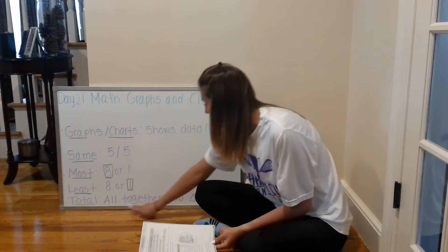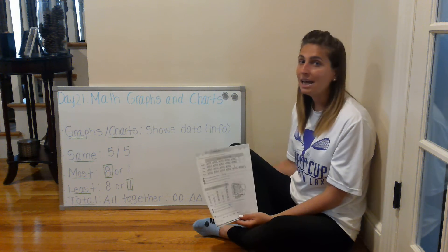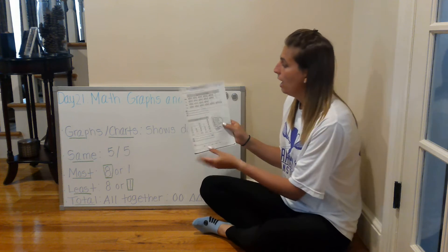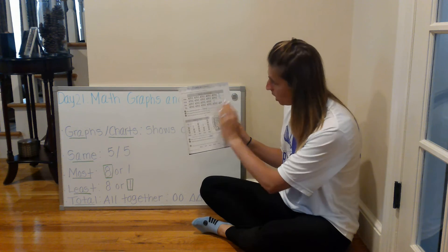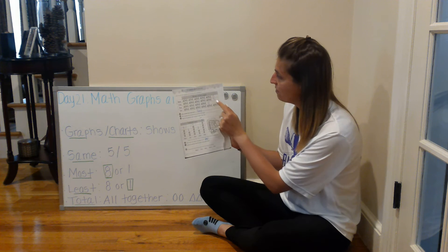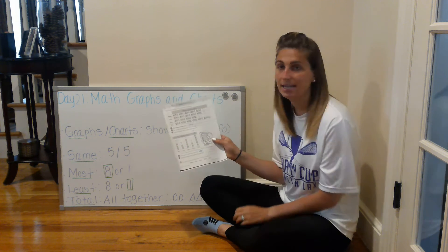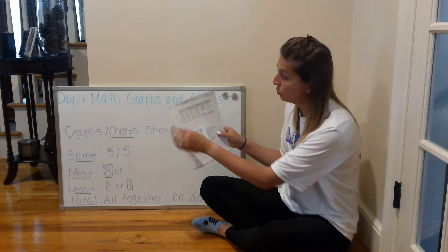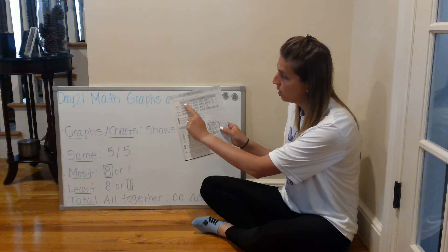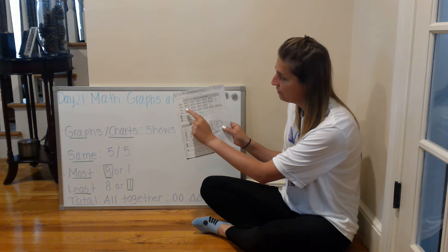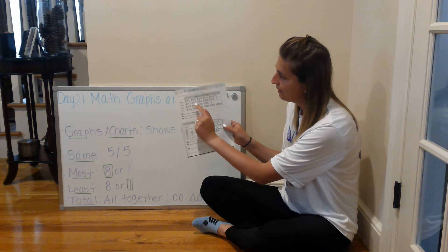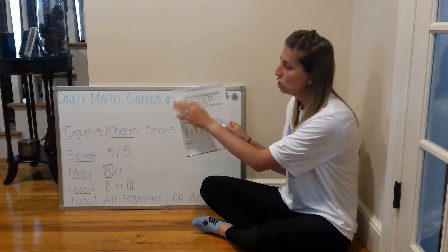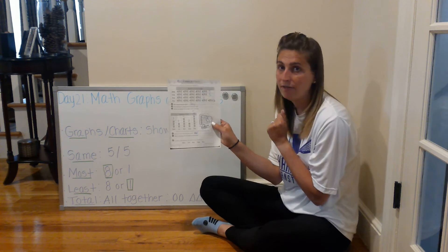Total means all together, so we add everything up. For the number of fishes caught in total, we add five plus five plus four plus six, which equals 20. So 20 fishes were caught in total.